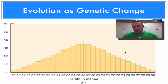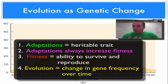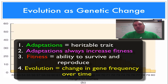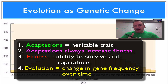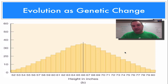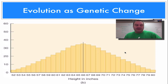Just remember: an adaptation always increases fitness. Adaptations are controlled by genes, so over time we should see the genes involved with that adaptation increase in frequency — and that's how we measure evolution. Until next time, catch you on the flip side.